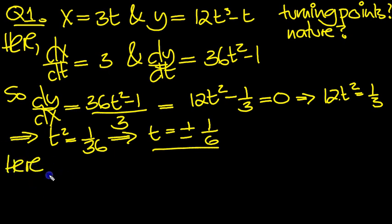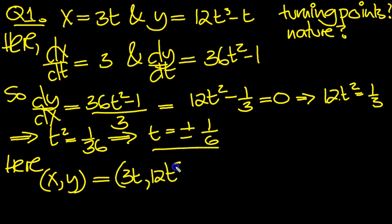So here, x, y coordinates then, these are the turning points, is equal to 3t. So that's equal to 3t, and 12t cubed minus t. Now we need to put in the values, t is a sixth and minus 1 sixth into here. So let's see what we get.